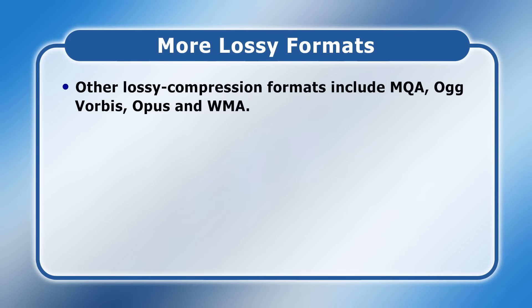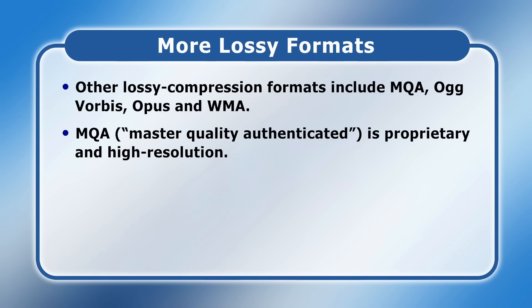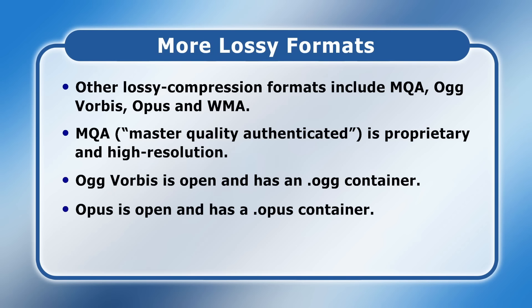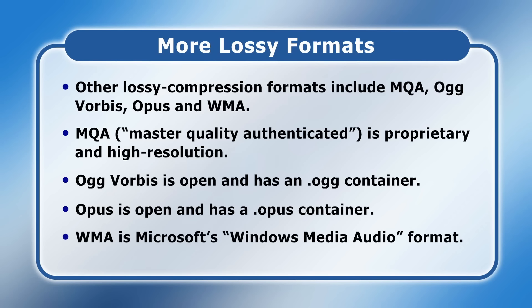Other lossy compression formats include MQA, OGG Vorbis, Opus and WMA. MQA, or Master Quality Authenticated, is proprietary and high resolution but has an uncertain future. In contrast, OGG Vorbis is an open, non-proprietary format that uses the OGG file extension. Opus is another open format that's great for streaming and uses the OPUS native file extension. And finally, WMA is Microsoft's Windows Media Audio, which is a less common lossy format than it used to be due to the rise of alternatives.